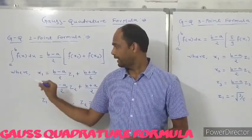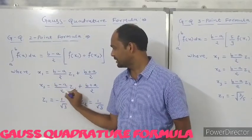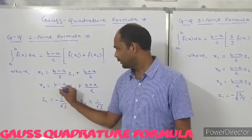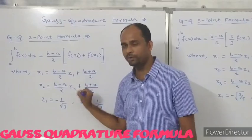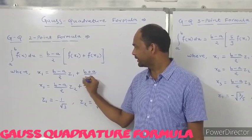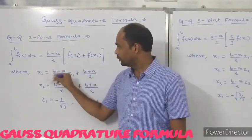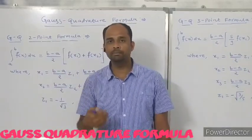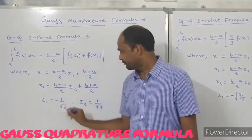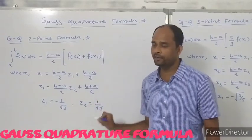The values of x1 and x2 share the same first term, (b minus a) upon 2, but x1 uses z1 multiplication and x2 uses z2 multiplication. The value of z1 is minus 1 by root 3, and the value of z2 is 1 by root 3.